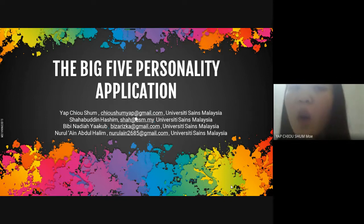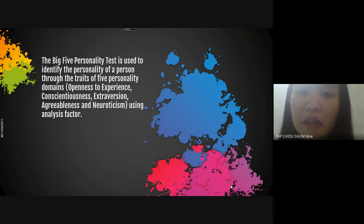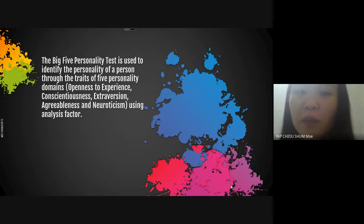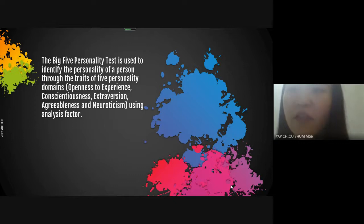So, what is the Big Five personality application? The Big Five personality test is used to identify the personality of a person through the traits of five personality domains: Openness to experience, Conscientiousness, Extraversion, Agreeableness, and Neuroticism, using analysis factors.